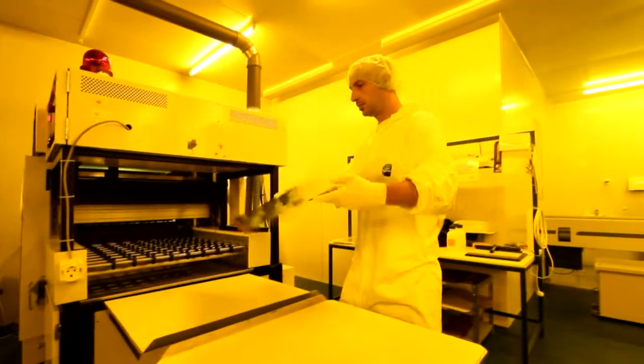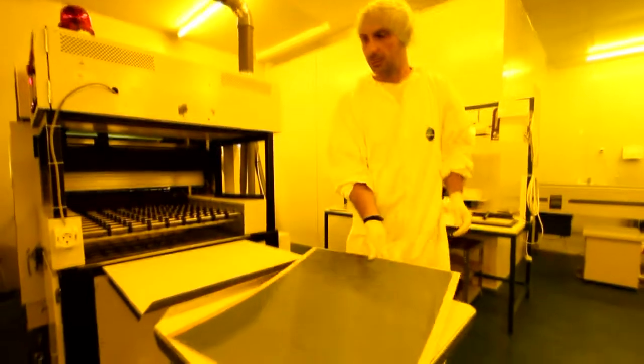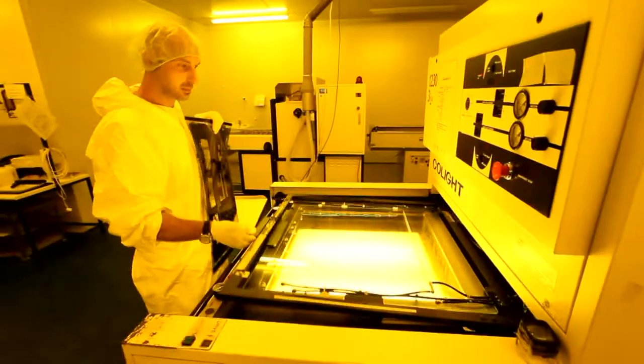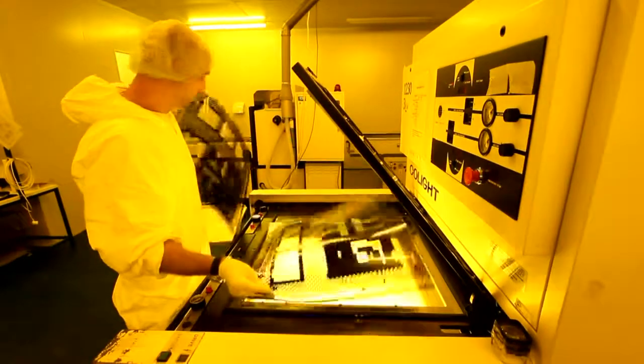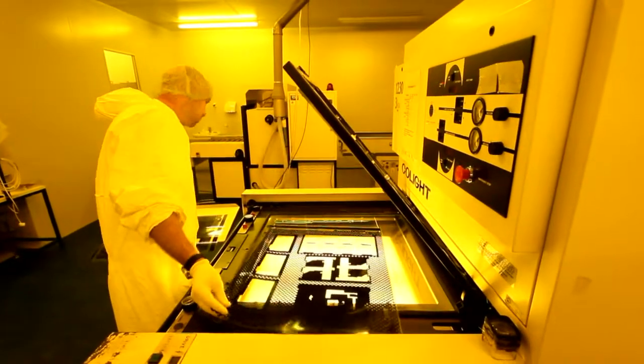The bed of the printer has registration pins matching the holes on the photo tools and in the panel. The operator loads the first film onto the pins, then the coated panel, then the second film.